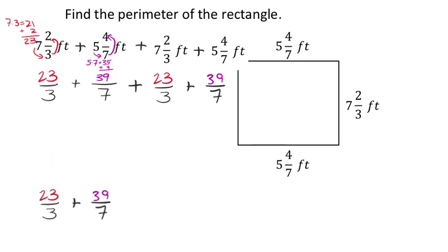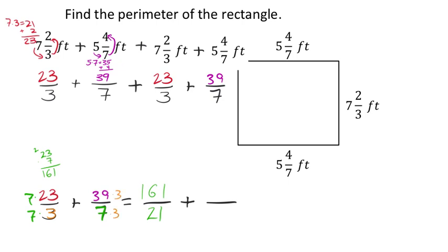To find common denominators for 23 thirds and 39 sevenths: multiply the second denominator 7 into the first fraction's numerator and denominator. Seven times three is 21 for the denominator, and 23 times seven is 161. Then multiply the first denominator 3 into the second fraction: seven times three is 21 (matching), and 39 times three is 117. So we get 161 twenty-firsts plus 117 twenty-firsts.